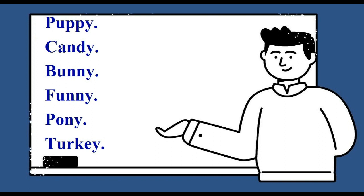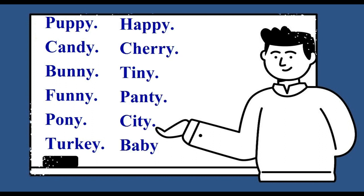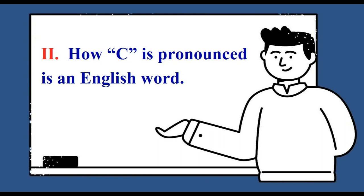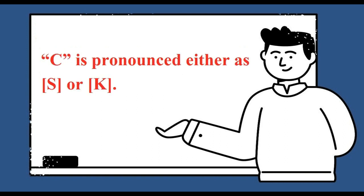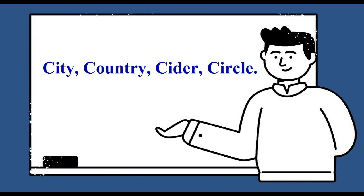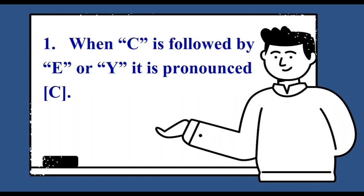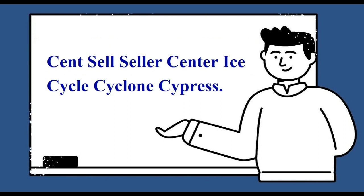How C is pronounced in an English word. C is pronounced either as S or K. When C is followed by E or Y, it is pronounced as S, like: scent, tangent, prevent, sale, tale, seller, center, ice, cycle, cyclone, cypress.